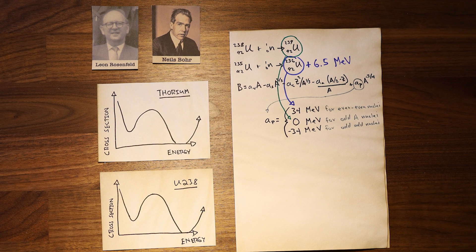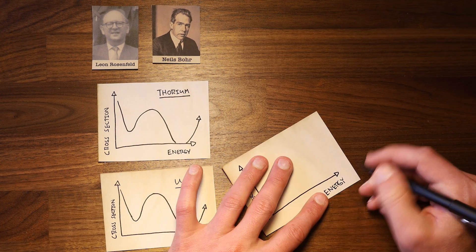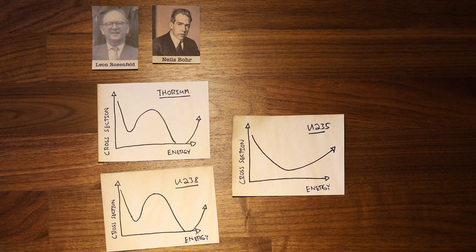This happens to be enough to induce splitting, even with a zero velocity neutron. Taking this into account, Bohr drew a third curve, his predicted curve for how uranium-235 would behave under neutron bombardment. This time, the whole curve represented only one outcome: splitting.